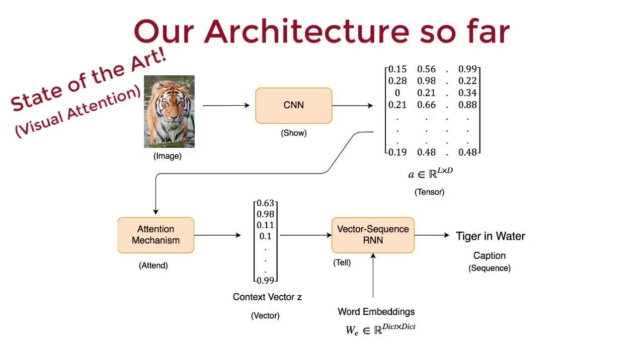This architecture that we have here is now the show attend and tell architecture. And this is considered the forefront of recent research on visual attention. We show the image to the CNN, focus our attention to specific regions of an image, and then tell the caption using the RNN. Show, attend, and tell. It's as simple as that.